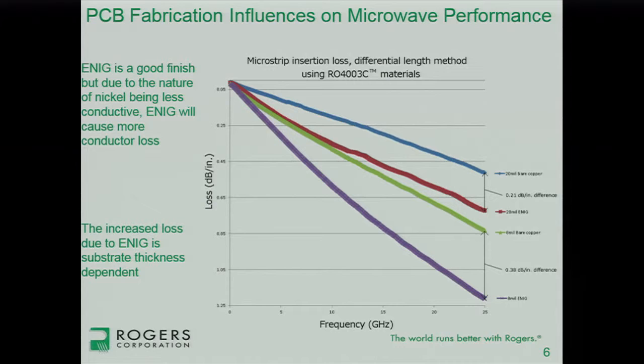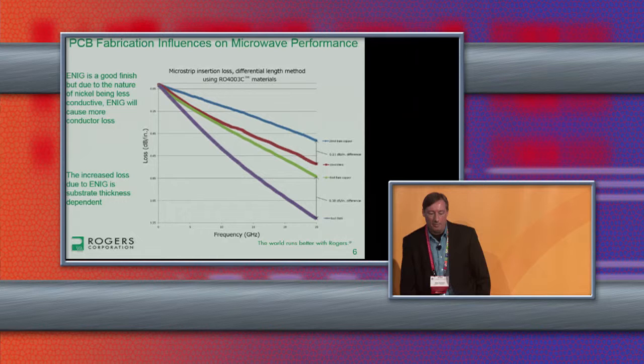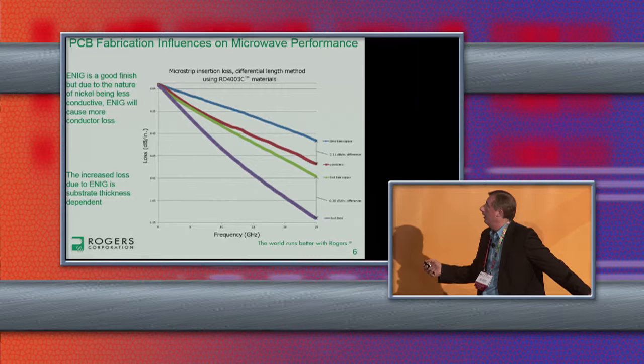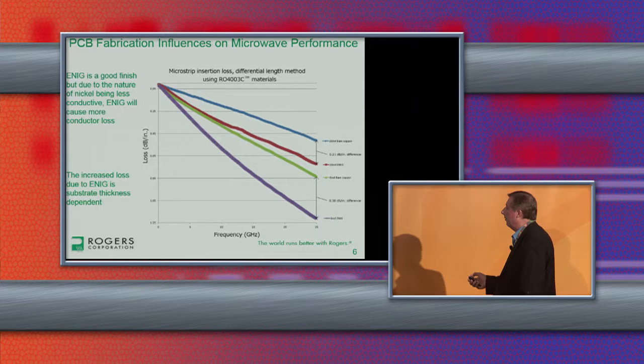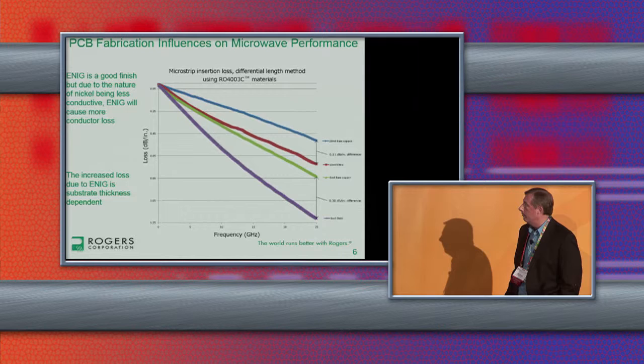In the case of a thin circuit that is very sensitive to conductor losses, you're going to see more of an increase. A thicker circuit, you'll see less of an increase. Looking at microstrip transmission lines using Rogers RO4003C material — I looked at a thicker and a thinner transmission line. The blue curve is a 20-mil thick substrate with bare copper; the red curve is the same circuit with ENIG plating — a difference of about 0.21 dB per inch at 25 gigahertz. For the thinner 8-mil thick substrate, the difference between bare copper and ENIG is about 0.3 dB per inch. So yes, the thinner circuit is more affected by conductor losses, and ENIG does increase conductor losses. That's just the nature of nickel.